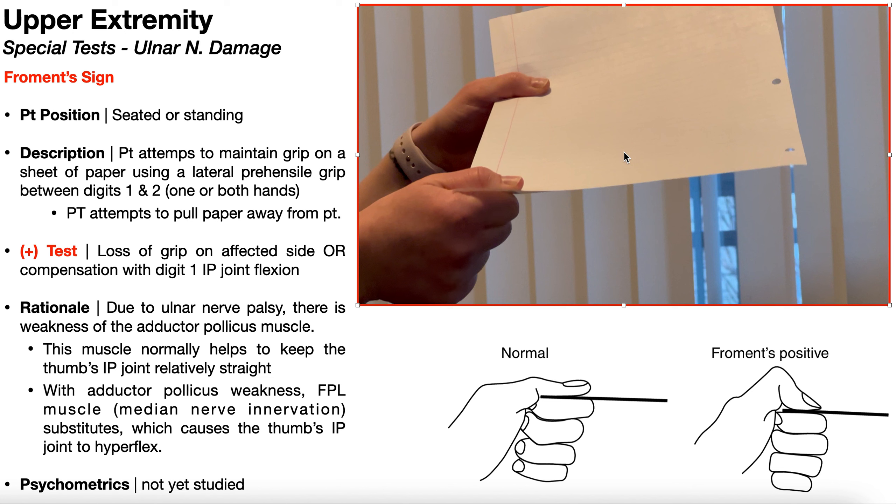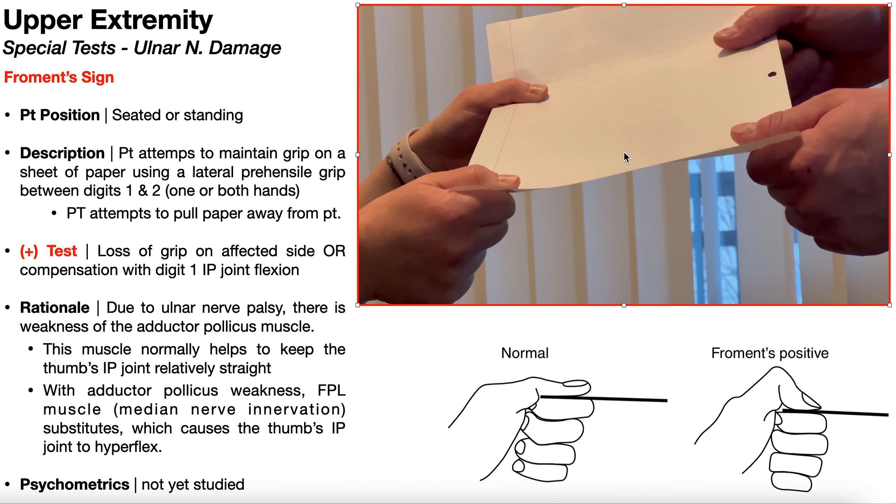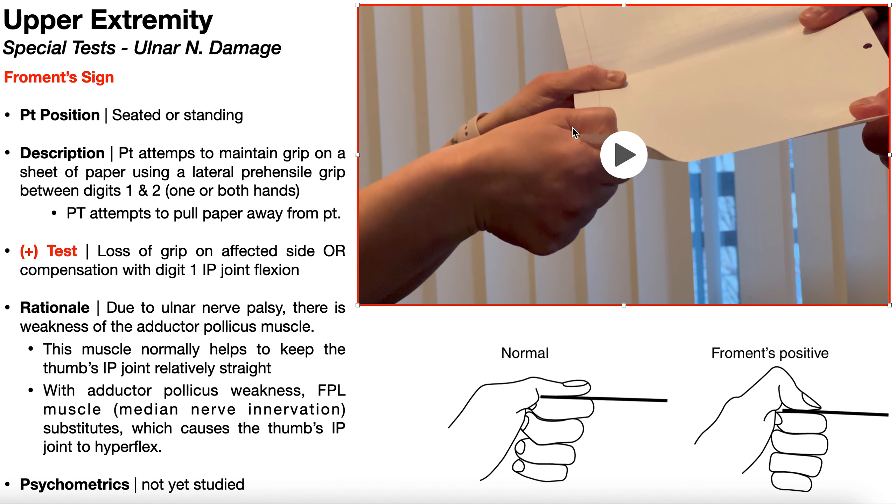So again, we're going to have the same patient position to start. They're going to have this lateral prehensile grip on the sheet of paper, and I'm going to attempt to pull it away. Now, as soon as I start pulling away, you notice what happens. On the right side, she has to compensate with that flexion at the interphalangeal joint of the thumb. But on the left side, she doesn't need to do that. You can see it. We still have that lateral prehensile grip on the left. So if I was interpreting this result, the left side is normal or negative, and we have a positive Froment sign on the right, which is suggestive of ulnar nerve palsy on the right.